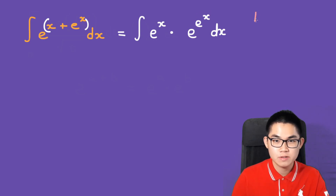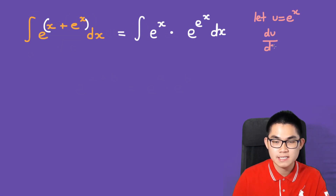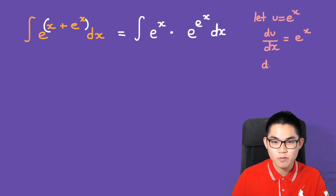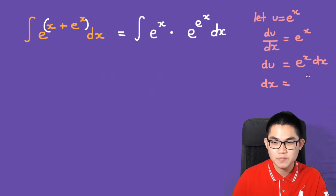So let u equal to e to the power of x. Then we differentiate it. du/dx — the derivative of e to the power of x is also e to the power of x. So we end up with du is equal to e to the power of x dx. And dx is going to be 1 over e to the power of x du.